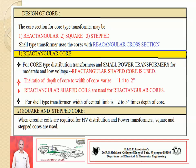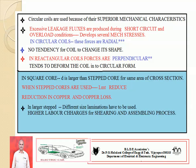Square or stepped type cores are used when circular coils are required in power transformers and distribution transformers. It is possible to use either circular coils or rectangular coils. Rectangular coils are used and circular coils are also used — so what is the difference? If you are using circular coils, these coils are superior in mechanical characteristics because when the transformer is subjected to short circuit or overload conditions, leakage fluxes produce a huge amount of mechanical stresses.